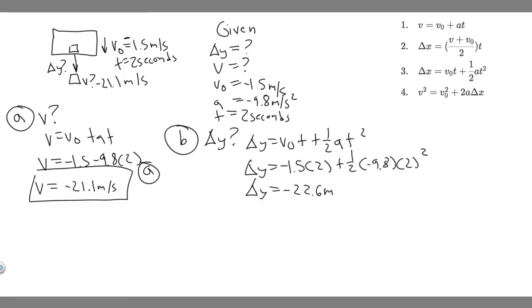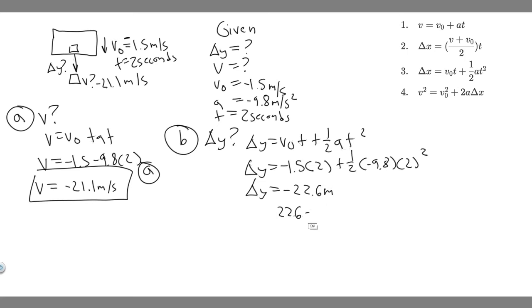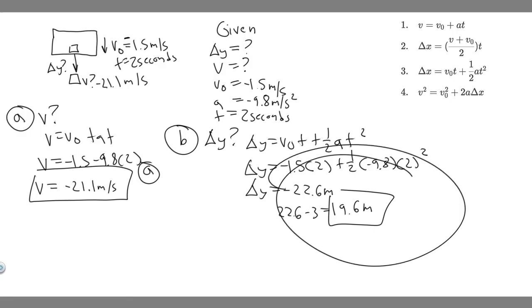Now, the helicopter's speed is constant — no acceleration — so its distance is just velocity × time: 1.5 × 2 = 3 meters downward. The separation between the mailbag and helicopter is 22.6 - 3 = 19.6 meters. So the mailbag is 19.6 meters below the helicopter.